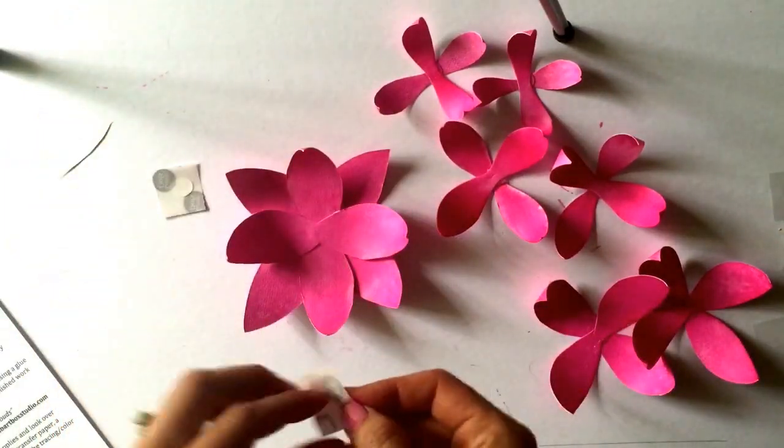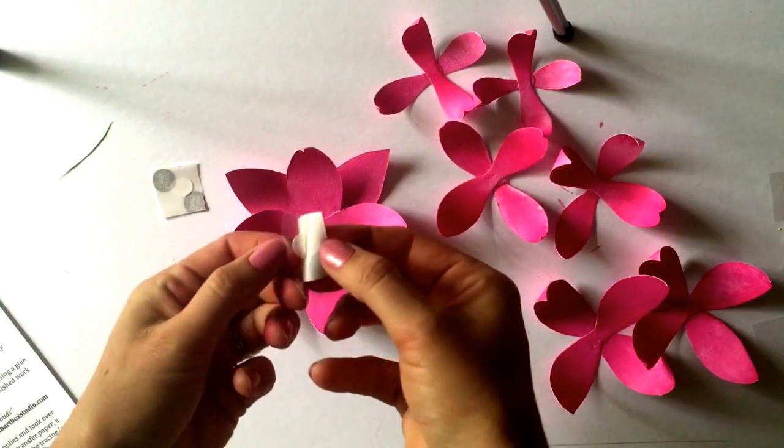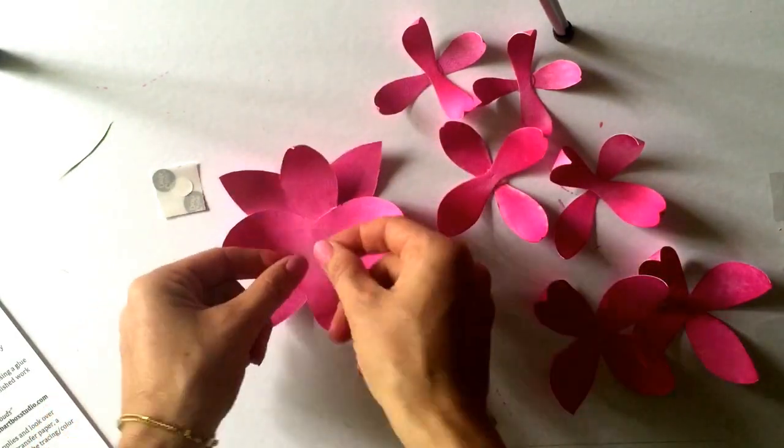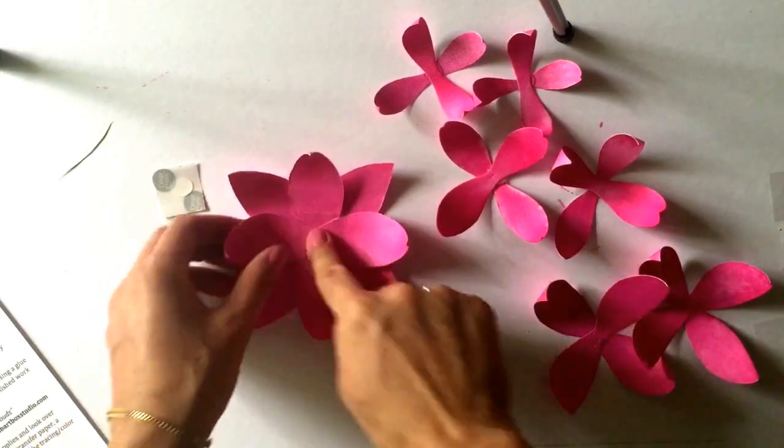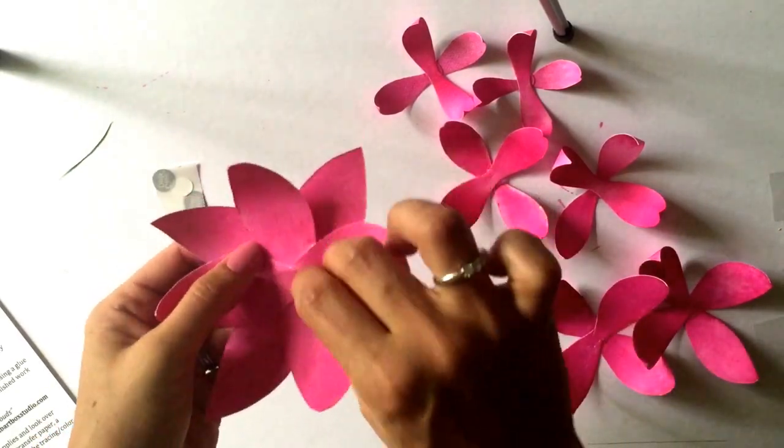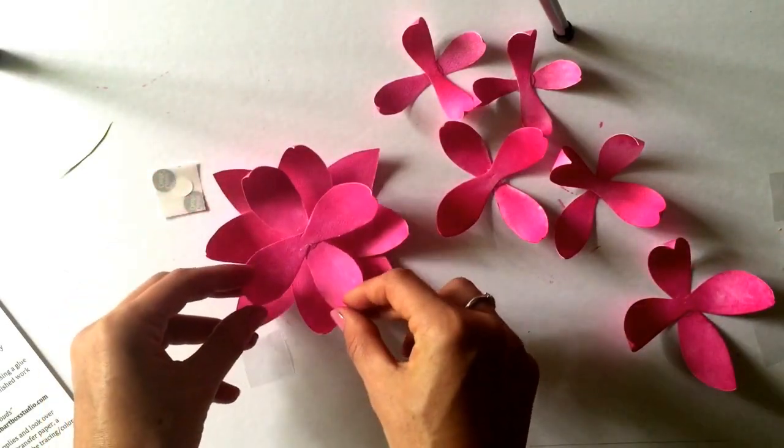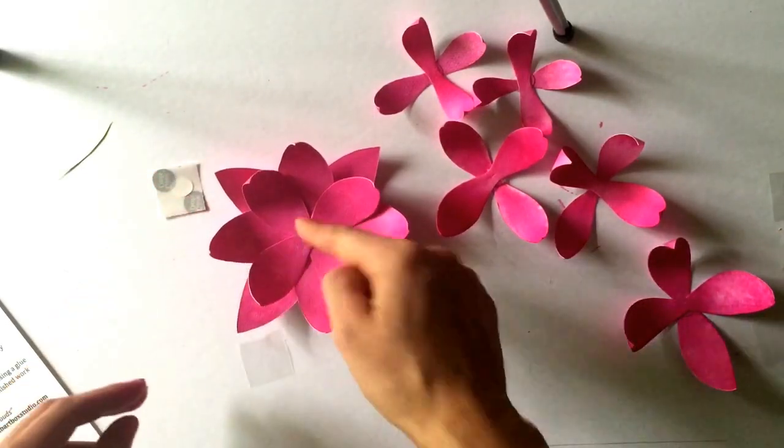Step 6c, repeat step 6a with all of the petal cutout sizes. Step 6d, stack and attach the petals using glue dots. The petal order is largest to smallest.